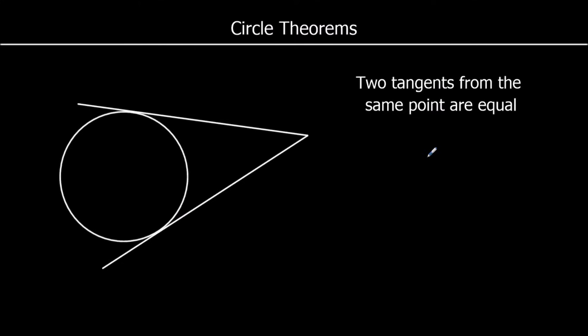The first theorem: two tangents from the same point are equal. A tangent is a straight line that just touches the circle — it doesn't go through it, it just touches it. If we draw two tangents from the same point, those two lengths will be equal. From the point to where the tangent touches the circle, that length equals the other one's length. So two tangents from the same point are equal in length.